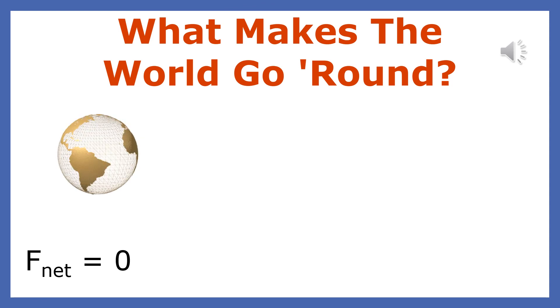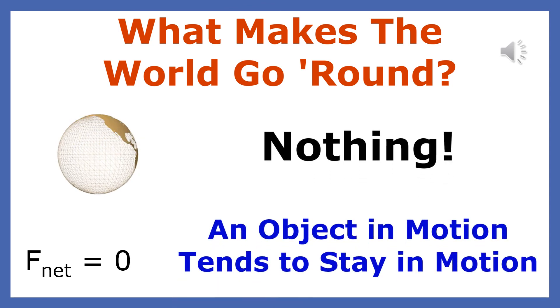Newton explained that nothing causes the spinning of the earth. A force must have sent it spinning, but once in motion, if there's no net force on it, you will maintain that motion forever.